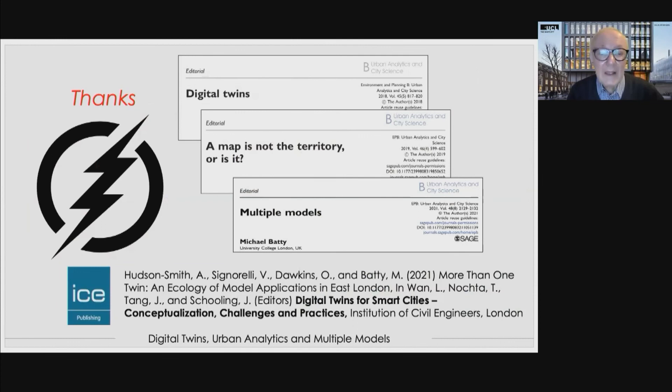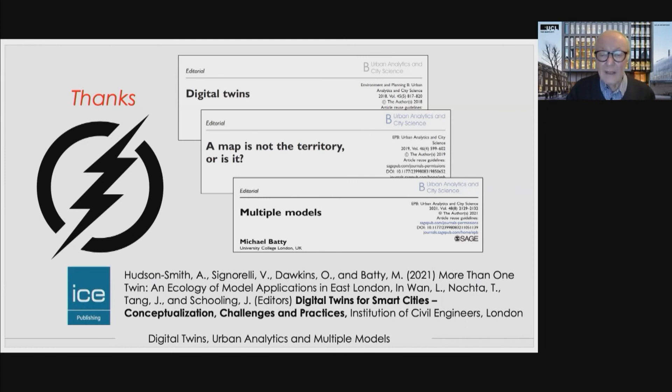The big question is how we integrate all of these technologies. I've written a number of editorials in Environment and Planning B about this, and we have a paper probing how we integrate these models, which is coming out in a book edited by various people including Jennifer Schooling, called 'Digital Twins for Smart Cities.' At that point I'll finish — thank you.